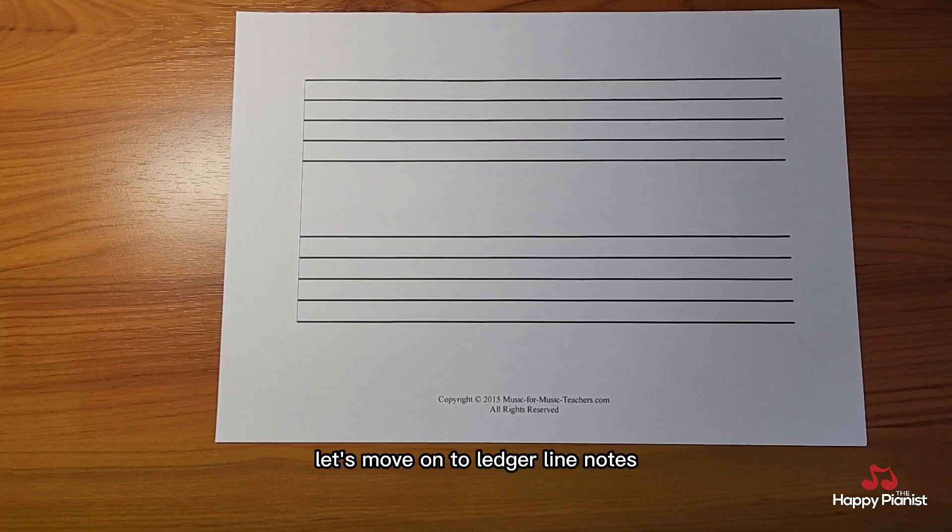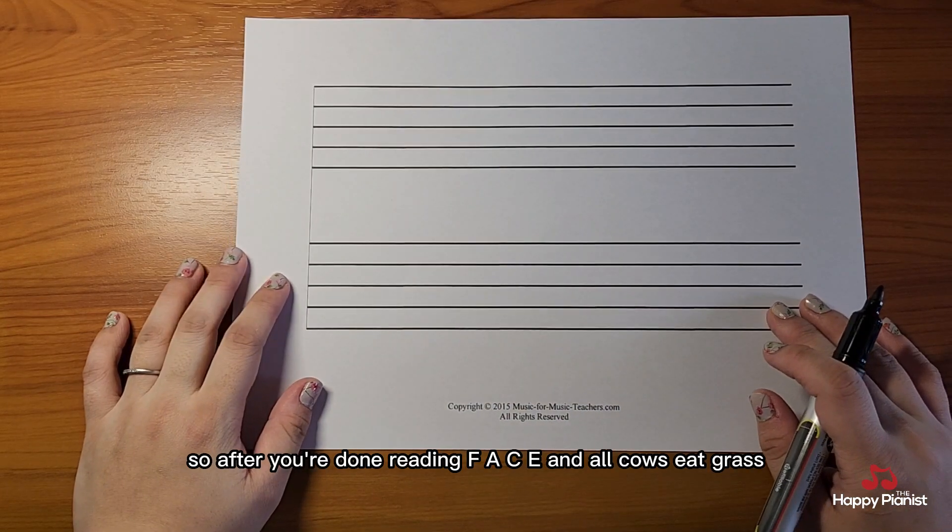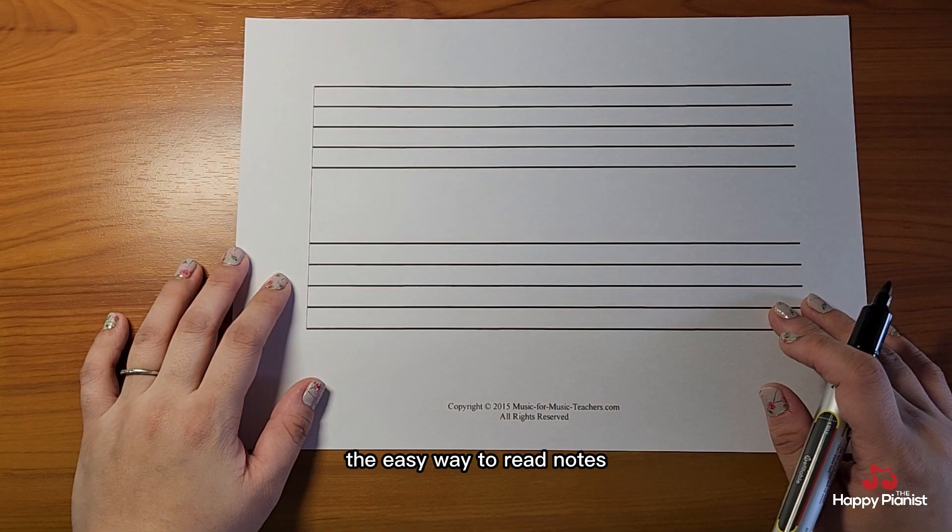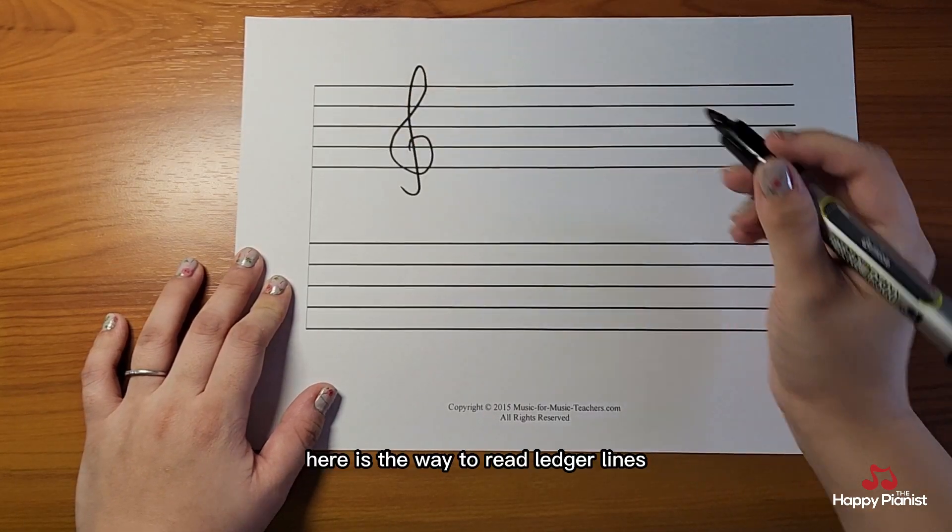Let's move on to ledger line notes. So after you're done reading F, A, C, E and all cows eat grass, the easy way to read notes, here is the way to read ledger lines.